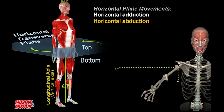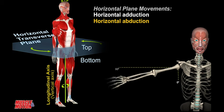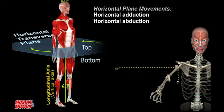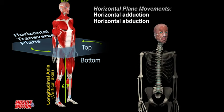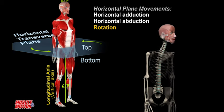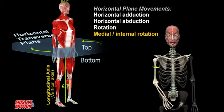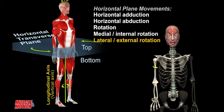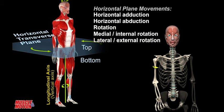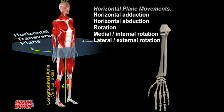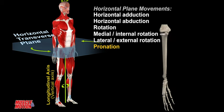For example: horizontal adduction and abduction, or horizontal flexion and extension, spinal rotation, internal and external rotation, and pronation and supination.